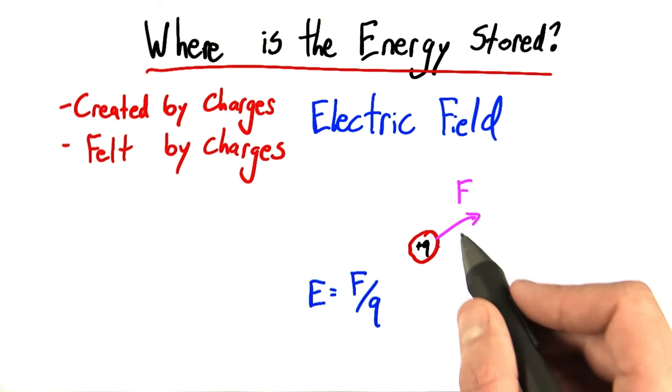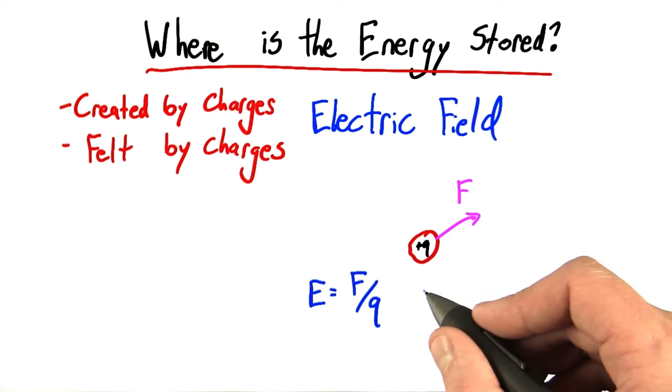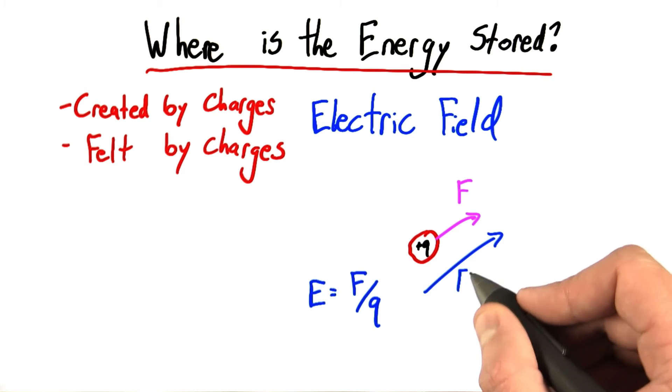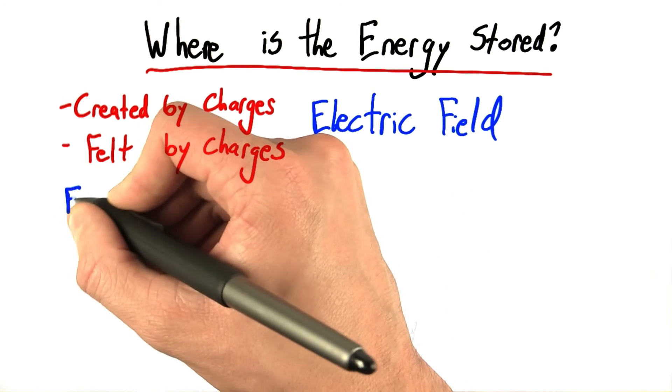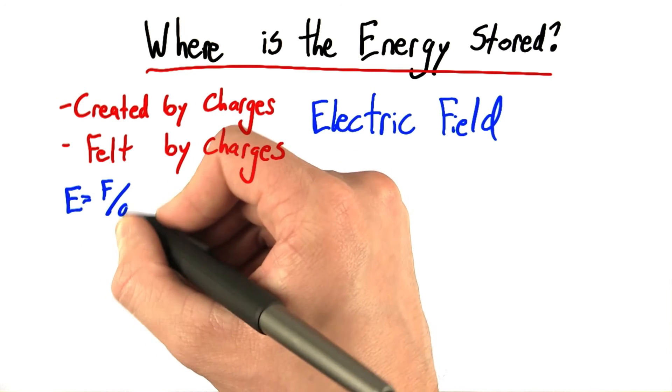So, if we found that there was some force in this direction, that means there must have also been an electric field in this direction at this point. So as a quick example of how to use this equation, E equals F over Q.